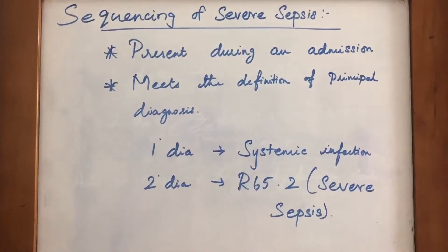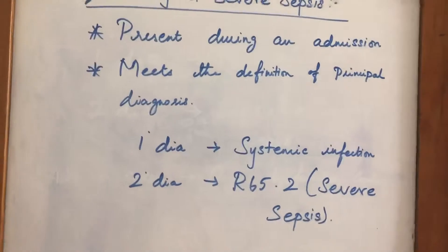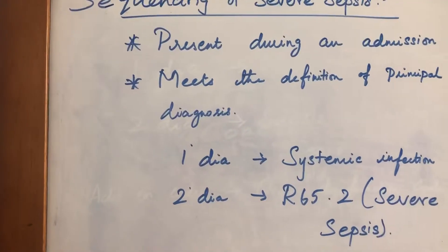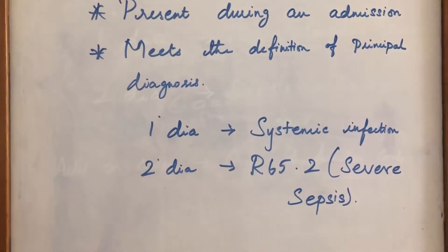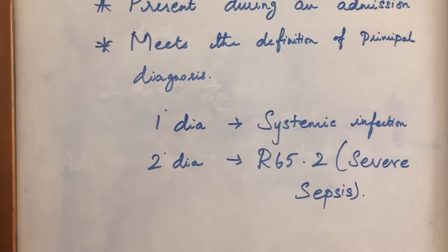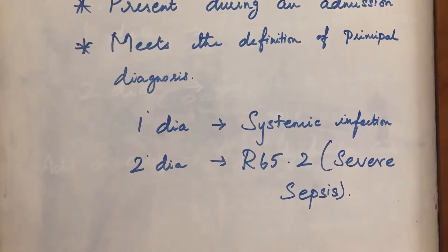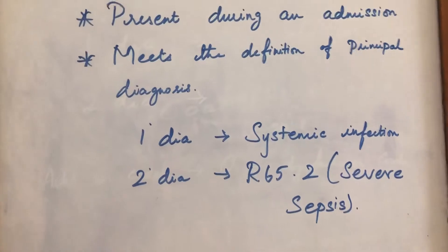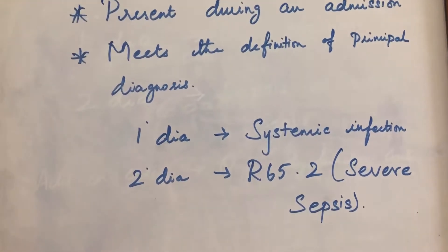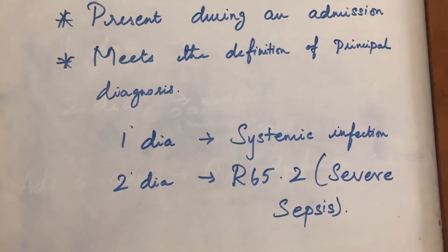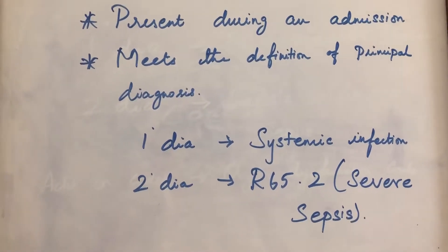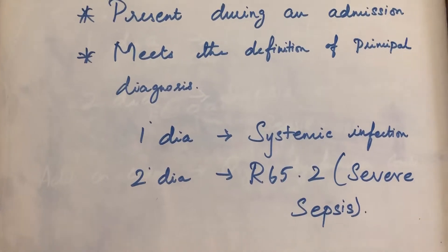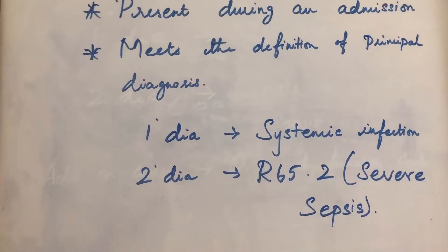Now let's look at the sequence for Severe Sepsis on admission. When a patient is admitted with Severe Sepsis, that meets the definition of principal diagnosis, the principal diagnosis is the systemic infection — which is very severe. The Severe Sepsis code is the principal diagnosis. The second diagnosis is coded separately.